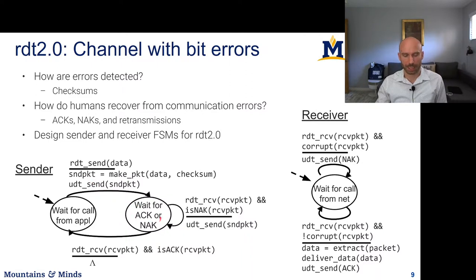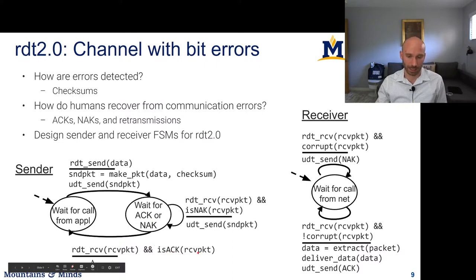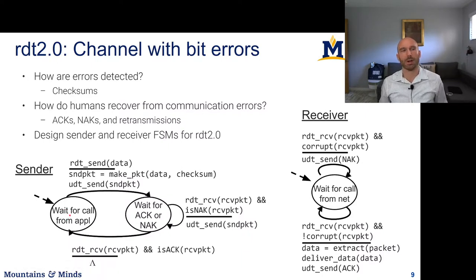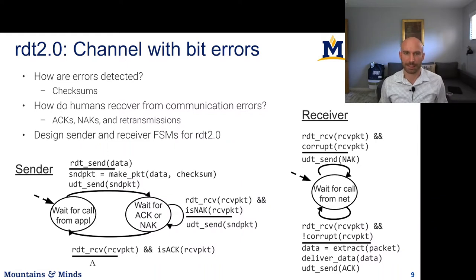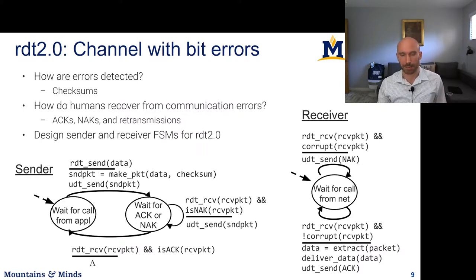If while waiting for an ACK or NAK the sender does receive an acknowledgement, that means the packet was received correctly and delivered to the application layer. The action is simply a lambda — do nothing — and we're back to waiting for another packet to send from the application layer. As we add more things that can happen on the network channel beyond just errors, these state diagrams will become more complicated.